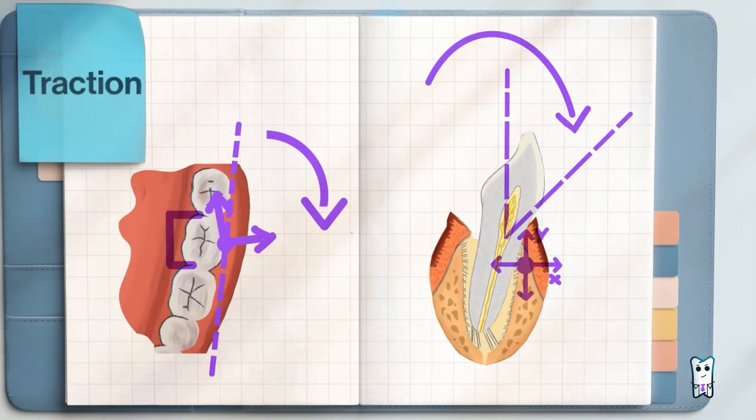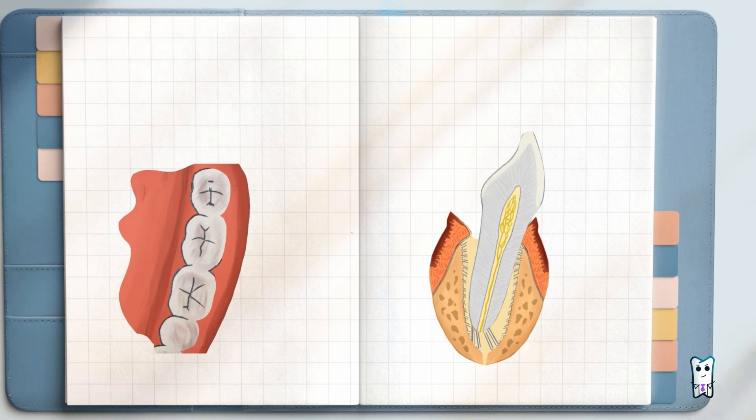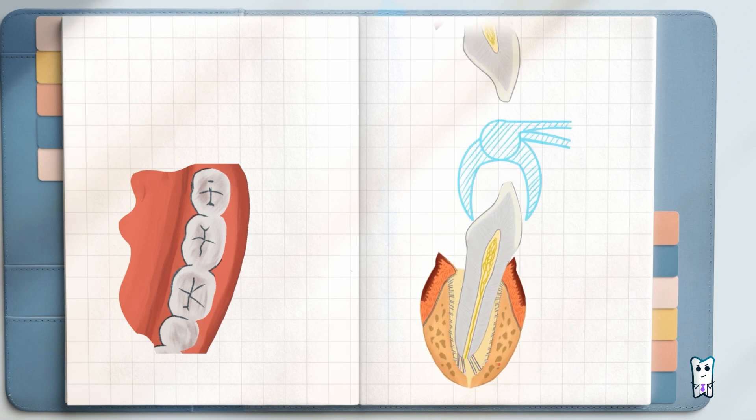During the luxation and especially during the traction, it's crucial to coordinate the movement of the forceps with the shape of the tooth roots. You have to feel the direction in which the tooth naturally emerges from the socket with the least amount of resistance. So, if the root of the upper premolar is with distal curve, the traction should be outward, upward and distal.